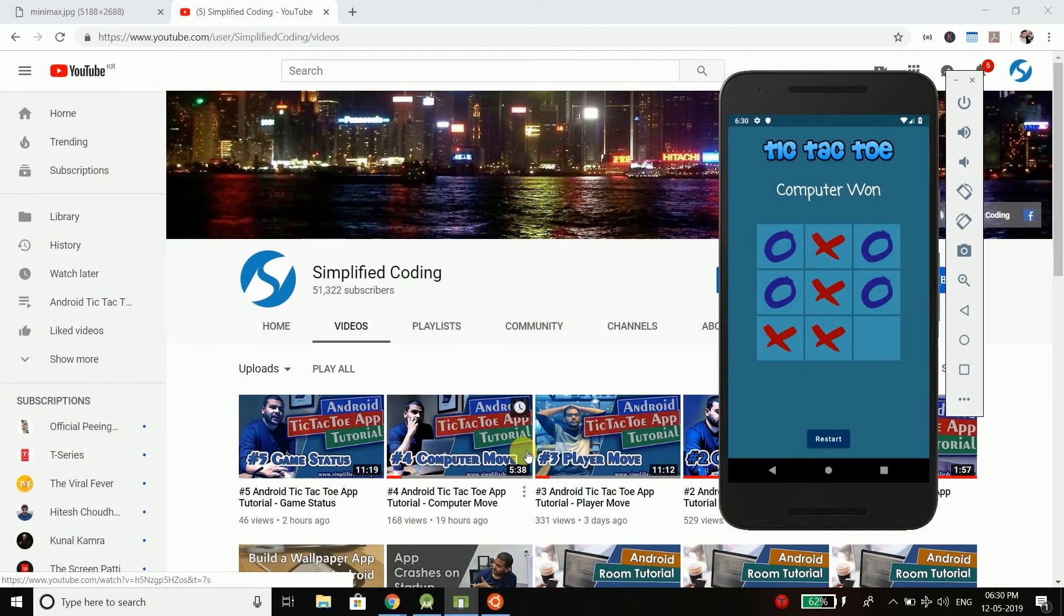Hi guys, this is Belal Khan and you are watching Simplified Coding. So we have a fully functional tic-tac-toe, but the algorithm is so dumb that we can beat it very easily. So now we need to make it intelligent and we can do it by using the algorithm Minimax.